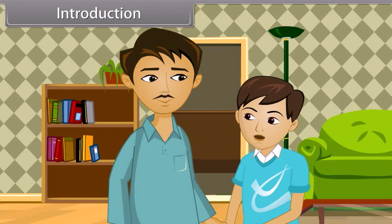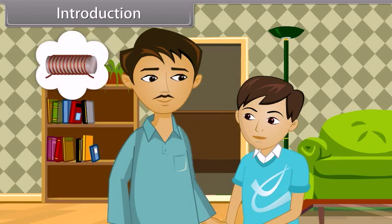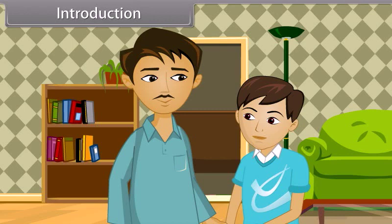Ravi asked his father how the doorbell works. His father replied that the doorbell works on the principle of solenoid. Solenoid is a circular current carrying coil. When the current passes through it, it behaves like a magnet. Students, you also must be curious like Ravi to know more about this. So today, we'll explore the moving charges and magnetism.